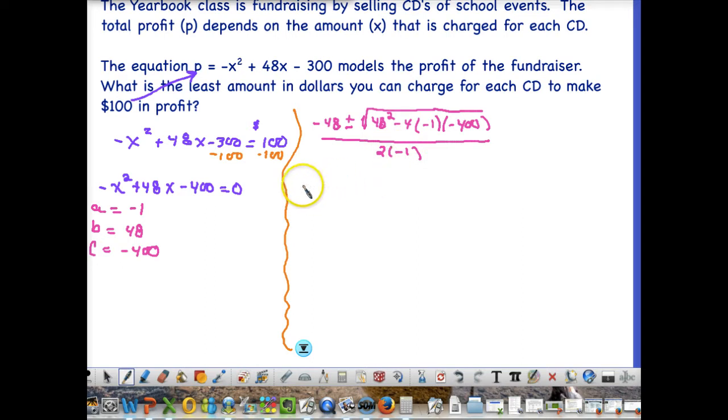So, now we would just need to go about simplifying this a little bit, and so what we would do first is simplify what is in the radical. You would do that in your calculator, and you would do 48 squared first, which would give you 2,304 minus, and then what we want to multiply together is 4 times negative 1, so that gives you negative 4, and then negative 4 times negative 400, which is going to give you a positive 1,600, so I would put 1,600 here.